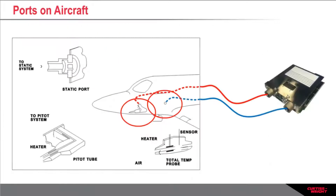Air data computers are attached to the ports of the aircraft as depicted in this picture. The pitot probe faces forward, collecting pressure which the air data computer converts into knots. The static port is located on the side of the aircraft in a position where it is least affected by forward pressure.